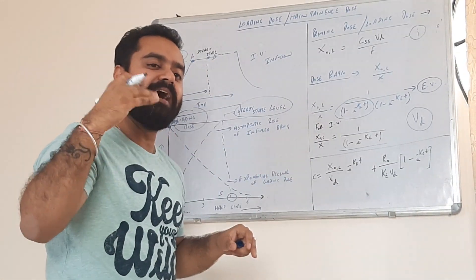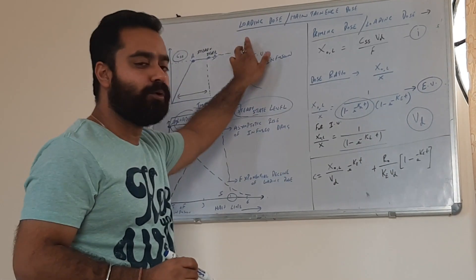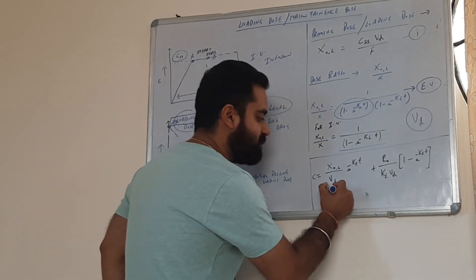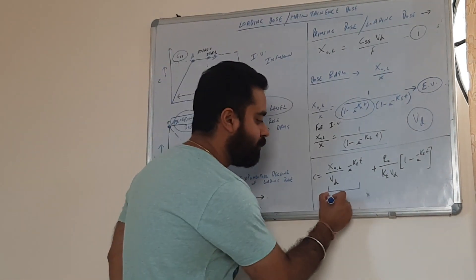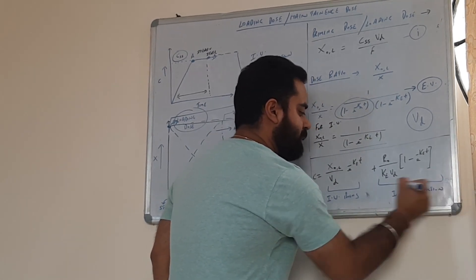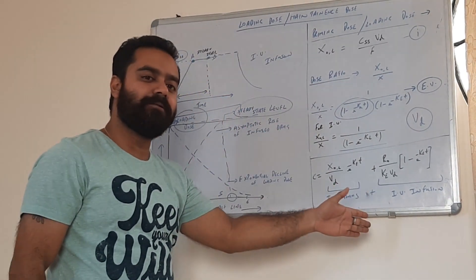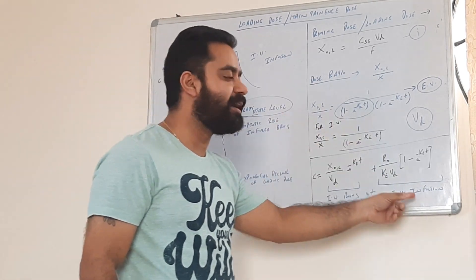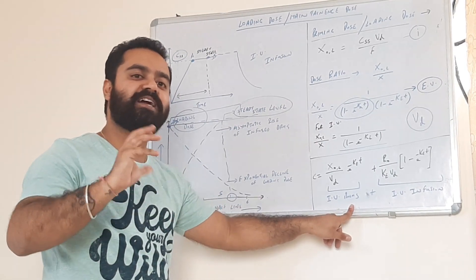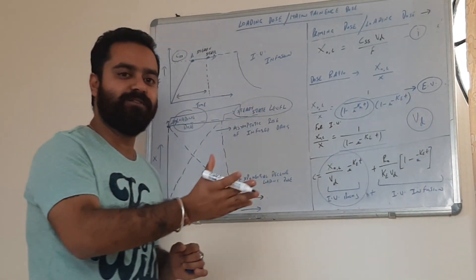Generally, the loading dose is larger than the maintenance dose — it is large enough to achieve the steady state concentration. We can also explain the concept of loading dose and maintenance dose by the equation: C equals x upon Vd times e to the power minus ke times t. This part is equivalent to IV bolus, while the other part is equivalent to IV infusion. This symbolic equation represents that the combination of loading dose and maintenance dose can be represented by simultaneously giving an IV bolus followed by IV infusion. IV bolus is a rapid, high-dose injection which achieves steady state concentration within 1 to 3 minutes. This part is the loading dose, where steady state is achieved rapidly.